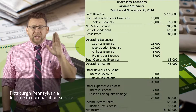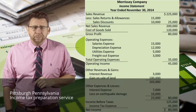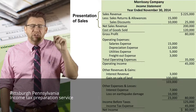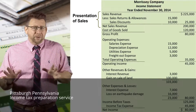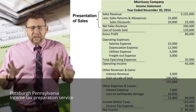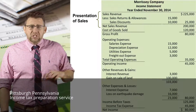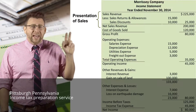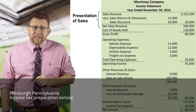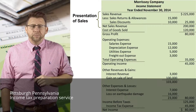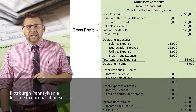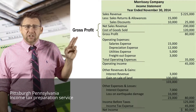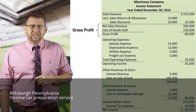Now let's look at the multi-step income statement more closely. It starts with the calculation of net sales revenue — no other revenue is included in this section. Sales revenue is reported first, then sales returns and allowances and sales discounts are deducted to arrive at net sales revenue. The next important subtotal is gross profit, calculated by taking net sales revenue minus cost of goods sold.